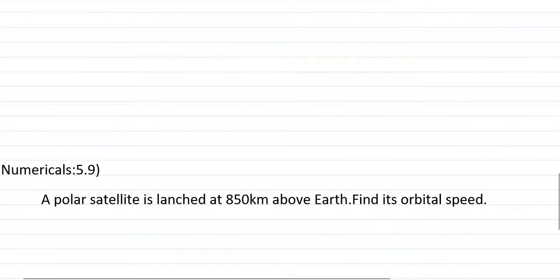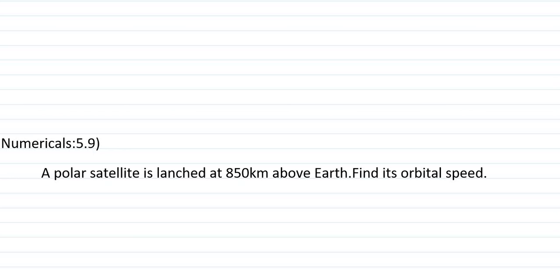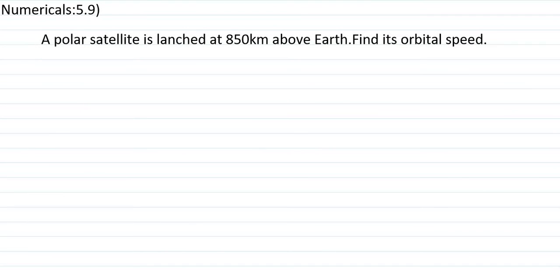Now solving numerical 5.9: A polar satellite is launched at 850 km above Earth. We need to find its orbital speed. The formula for orbital velocity involves R + H. We first need to find the value of gH, so we start by finding R + H.